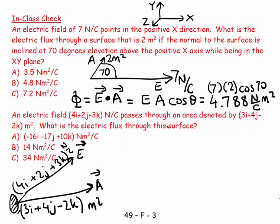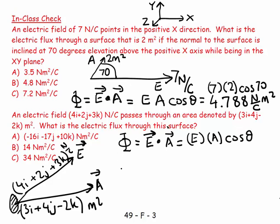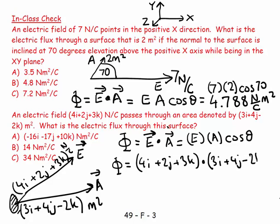The flux equals vector E dotted with vector A. That's the magnitude of E times magnitude of A times cosine of the angle, but I won't use that form here. My flux equals (4i + 2j + 3k) dotted with (3i + 4j - 2k).